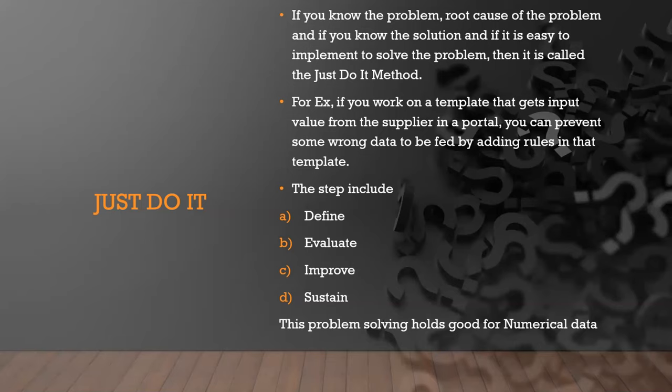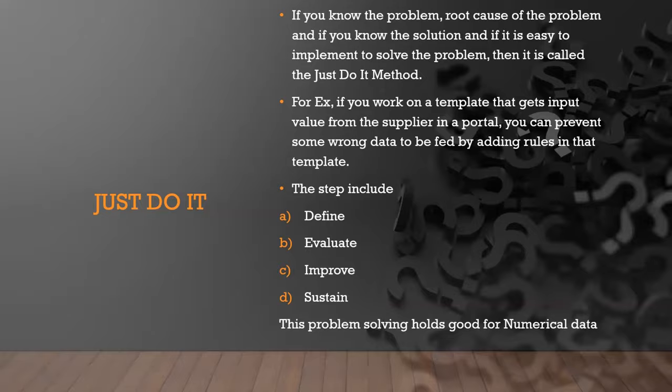The next problem-solving technique is Kaizen. Kaizen means change for an improvement. If you know the problem and root cause and you have a smaller or continuous improvement to solve it, that is Kaizen. For example, you can avoid over-processing of a task that takes too much time to convert an input into an output. This also includes steps like identify, define, evaluate, apply, and sustain, and it holds good for numerical data.